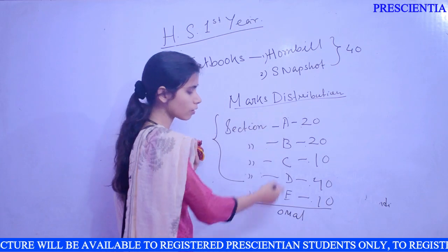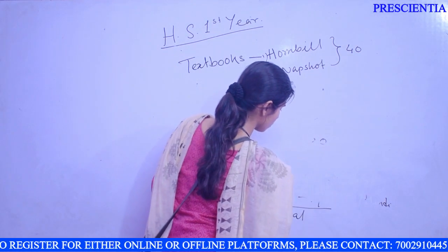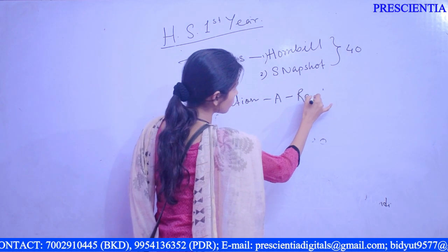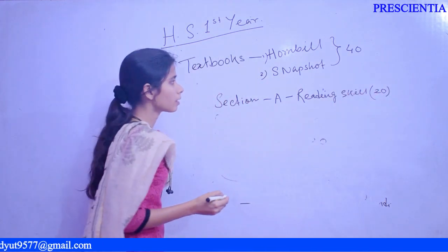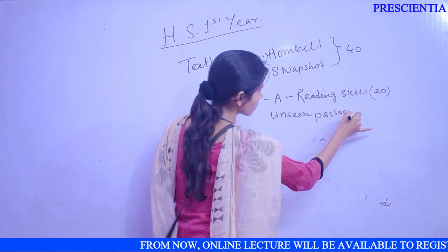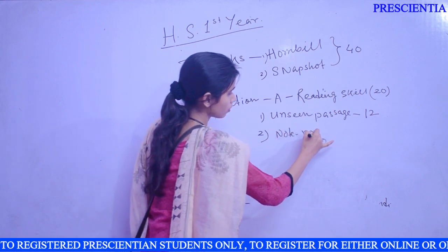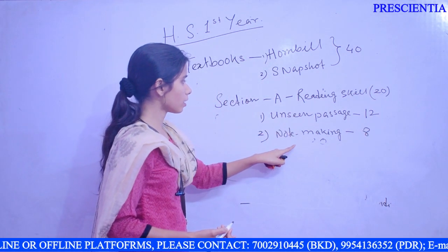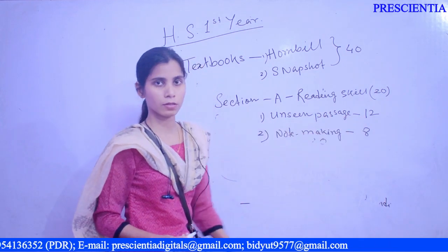Section A is called Reading Skill and covers 20 marks. Here you will have two topics. First, unseen passages — as you have done in your last class — covering 12 marks. Second, note making, which may be a new topic for you, but don't worry, we will discuss it. Reading Skill covers unseen passages and note making: 12 plus 8, totalling 20 marks.